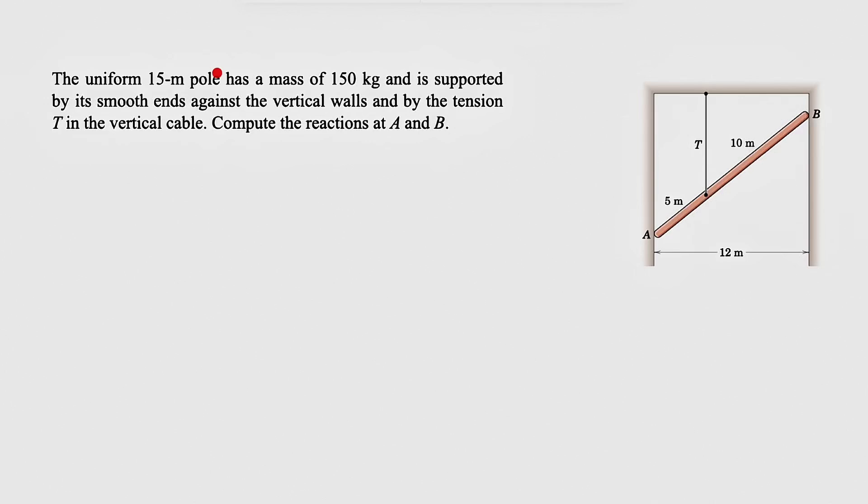We're going to be solving another question from the third chapter of the Merriam textbook in Geomechanics. We have this uniform 15 meter pole that has a mass of 150 kilogram. The beam is supported by smooth ends against the vertical wall.